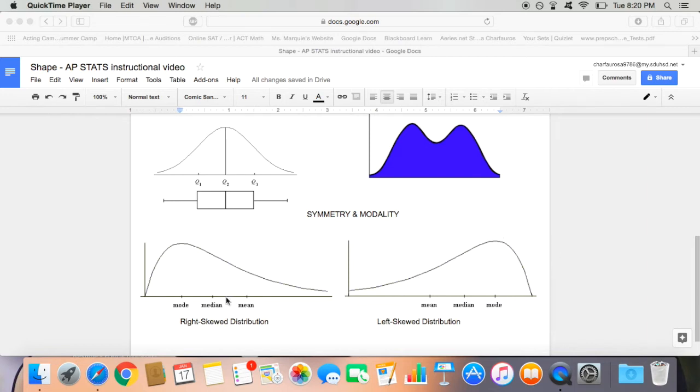Also take note that the mean in the right skewed distribution is far bigger than the median. This is because the mean is a non-resistant value. In the left skewed distribution, the mean is far lesser than the median, because it's a non-resistant value. These values on each end pull the mean to either side.